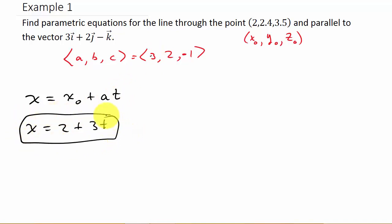Y is equal to y₀, which is 2.4, plus—I'm sorry, that should be plus bt. And then b is 2, so that's 2t. So that's y = 2.4 + 2t.